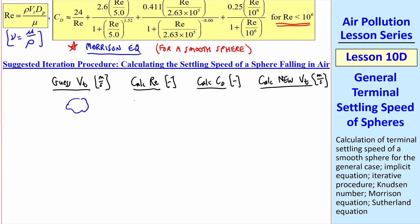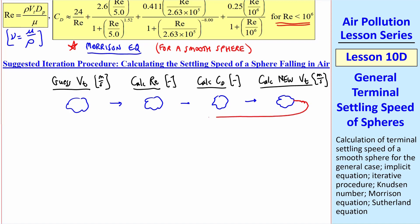You guess some vt. You calculate a Reynolds number. You calculate a Cd. You calculate a new vt. And the trick is to use this new vt as your second guess.